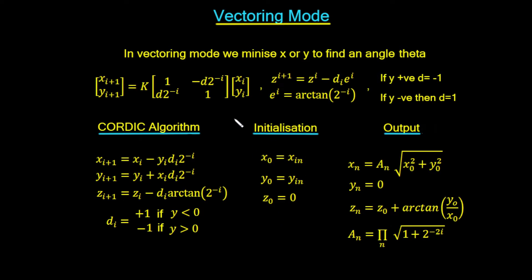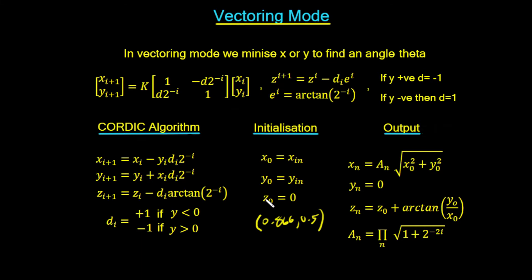This is the initialization for the algorithm that we used over the last couple of videos. We had x_0 equal to x_in and y_0 equal to y_in. So x_0 and y_0 are just the position on the circle for the point — in our example, that was 0.866 and 0.5. We also said that we started off with the first value for our angle z_0 equal to 0.